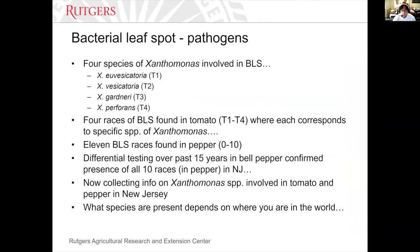We've done a lot of work with bacterial leaf spot in New Jersey these past few summers, so I want to give you an update of where the pathogen stands from a taxonomic standpoint. There are at least four species of Xanthomonas involved in bacterial leaf spot in tomato and pepper: Xanthomonas uvesicatoria, Xanthomonas vesicatoria, Xanthomonas scardinai, and Xanthomonas perforans. Fifteen years ago we just knew it as one species, but as technology and science have improved, the ability to separate these pathogens into different species has become more prevalent.